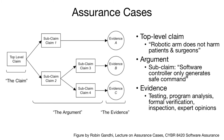A typical assurance case contains three major components. First, a top-level claim, which corresponds to a particular certification requirement that you're trying to achieve. Second, the argument itself, which consists of a set of subclaims that are together sufficient to ensure your top-level claim. And lastly, a set of evidence intended to support those subclaims. The evidence itself can be in different kinds of forms, ranging from the result of testing all the way to inspection and the opinions of a domain expert.